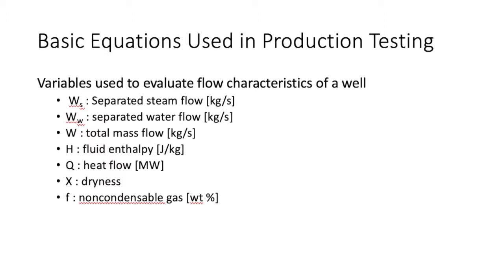These quantities are used to evaluate the well's flow characteristics. We look at the separated steam flow, the separated water flow, and the total mass flow, which is the combination of steam and water flow. We also look at the fluid enthalpy, the heat flow, the dryness factor, and the non-condensable gas weight percentage.